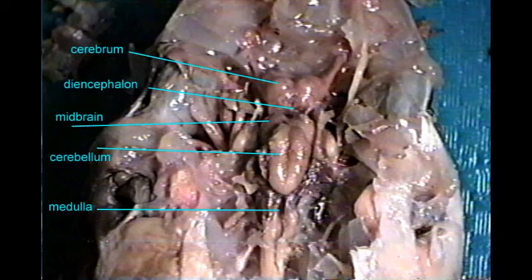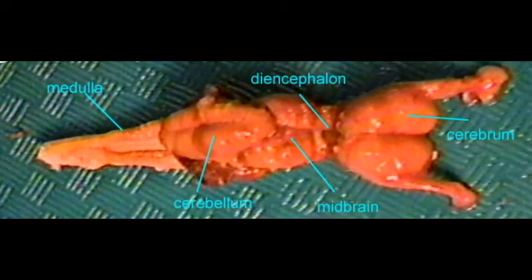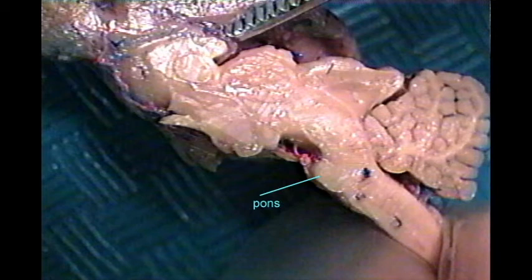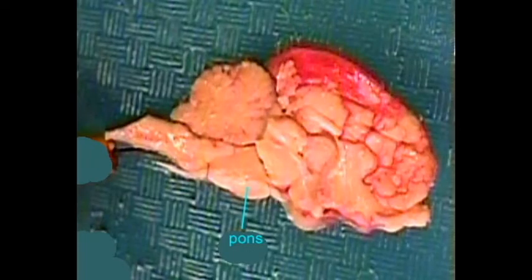As mammals enlarged their cerebrum and cerebellum, the region we know as the pons, which sorts out the fibers going to and from these large brain regions, first formed.